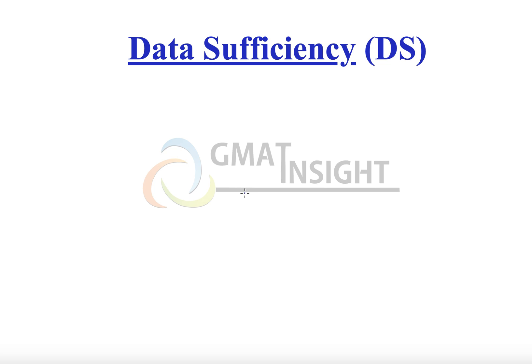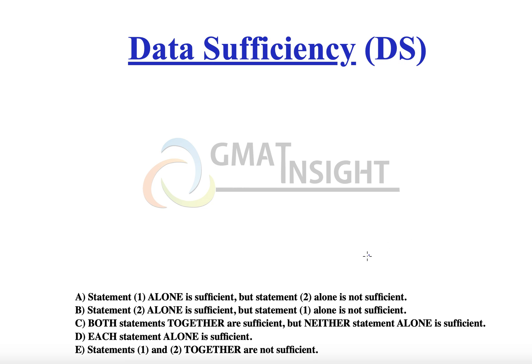Let me quickly get you well acquainted with the type of data sufficiency questions we're dealing with. Data sufficiency questions come with five standard options, unlike problem solving questions. We have five fixed options right here, and the options say that statement one alone is sufficient but statement two alone is not sufficient, and so on.